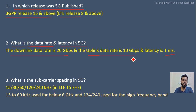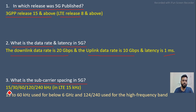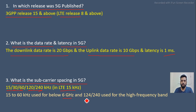Next question: what is the subcarrier spacing in 5G? Subcarrier spacing is not fixed in 5G — it is variable. We have multiple values: 15, 30, 60, 120, and 240 kHz. In LTE it was only 15 kHz. Here, 15 to 60 kHz subcarrier spacing is used for below 6 GHz frequency bands, and 120 to 240 kHz is used for high frequency bands, i.e., millimeter wave.